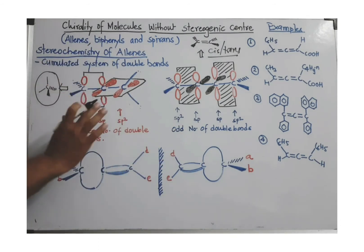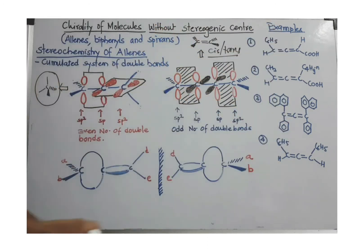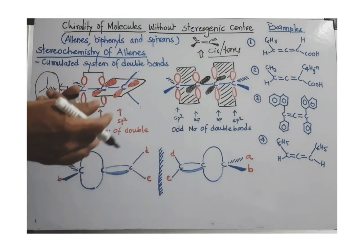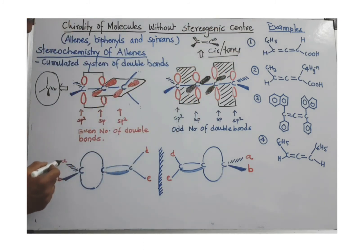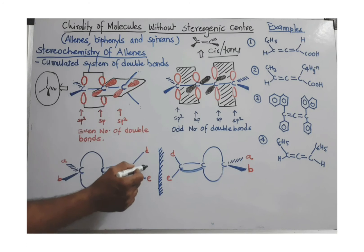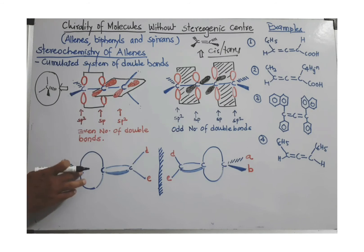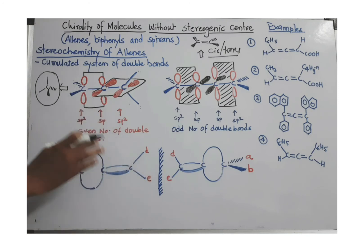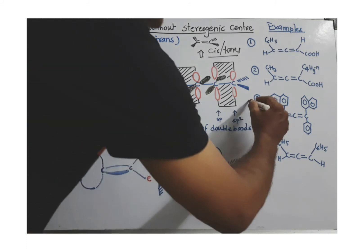Now, I want to clarify one more point before proceeding. I have shown four different groups in some examples, but that is not necessary. Only two different groups are required. If two different groups are present at the terminal carbons and that group is repeated on the other terminal carbon, the molecule can still show optical activity and can form a non-superimposable mirror image.